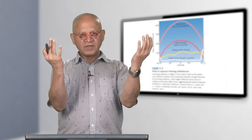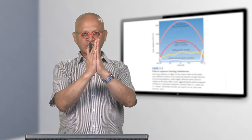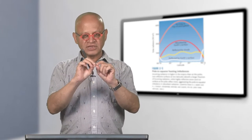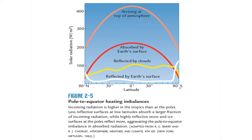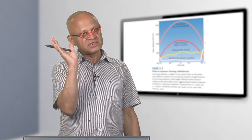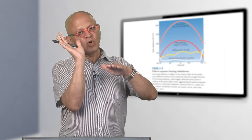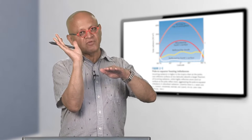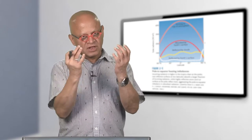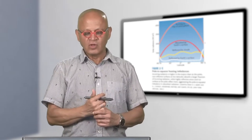You take the whole globe, average over all longitudes, and look at the distribution from the equator to the pole. At the top of the atmosphere, arriving short wave radiation is distributed with more radiation at low latitudes and less at high latitudes, basically because the earth is tilted at 23.5 degrees to the orbital plane, meaning the poles point toward the sun for 6 months and away for 6 months. The tropics receive sunlight at a similar rate all year long.